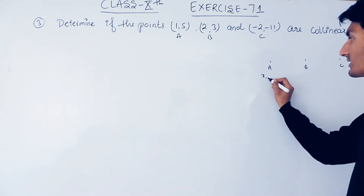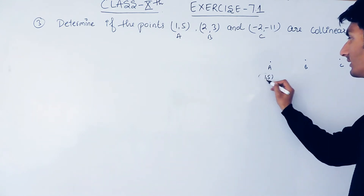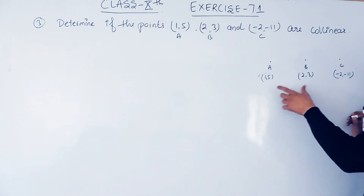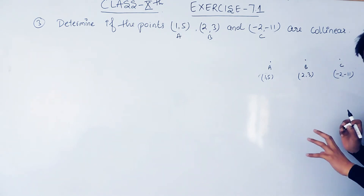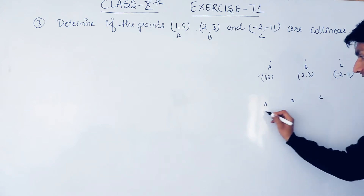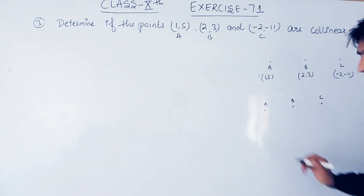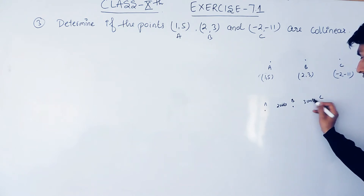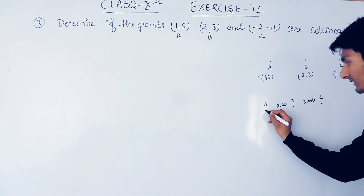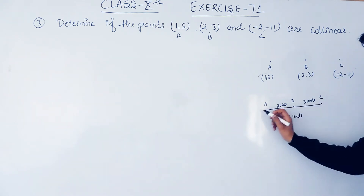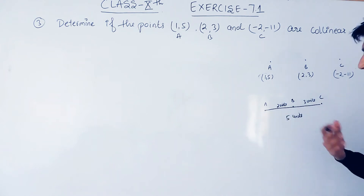The coordinates of A are (1,5), the coordinates of B are (2,3), and C is (-2,-11). If they lie on a straight line, then these three points will be collinear. For example, if the distance between A and B is 2 units and the distance between B and C is 3 units, and they lie in a straight line, then the distance between A and C must be 5 units — only then will these three points be collinear.